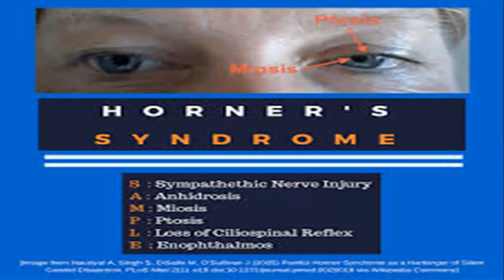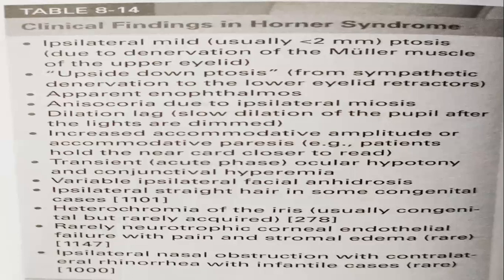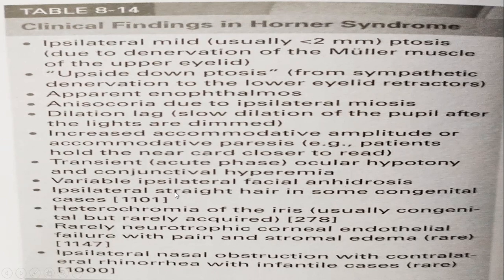When I appeared for my UG final year examination, my examiner asked what are the eight features of Horner syndrome. This photo is taken from Paul Brazis's localization in clinical neurology — they give 12 points for Horner syndrome. The classical features include ipsilateral ptosis, upside-down ptosis, enophthalmos, miosis, anisocoria, dilator paresis, increased accommodative amplitude or accommodative paresis, transient ocular hypotony, and facial anhidrosis. For congenital or hereditary Horner syndrome, there are additional features: ipsilateral straight tears, heterochromia iridis, neurotropic corneal endothelial failure, and ipsilateral nasal congestion. So one can mention eight general points plus four specific to hereditary Horner syndrome.